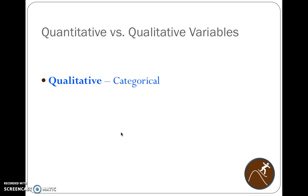Quantitative variables are variables where information or data are collected in a numerical way. Qualitative data are information or data collected in a way that fits into categories — making them categorical. This may be hard to understand without prior knowledge, so we'll cover some examples and be more specific in the next few minutes.